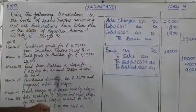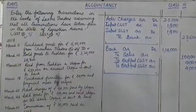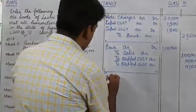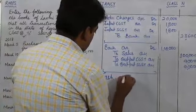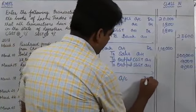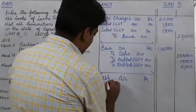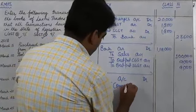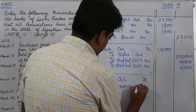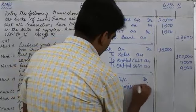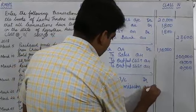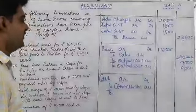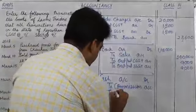Now see next: commission of rupees 10,000 received in cash. So this is your income. What comes in will be debited, that is why cash account will be debited. And we credit commission account — this is our income — and again we have to credit output CGST and output SGST.